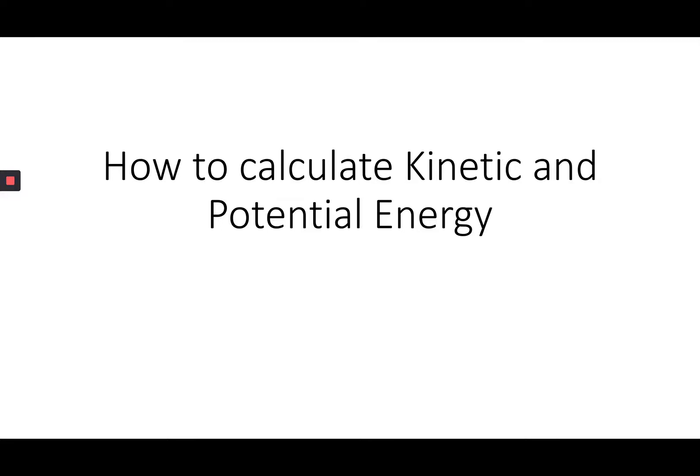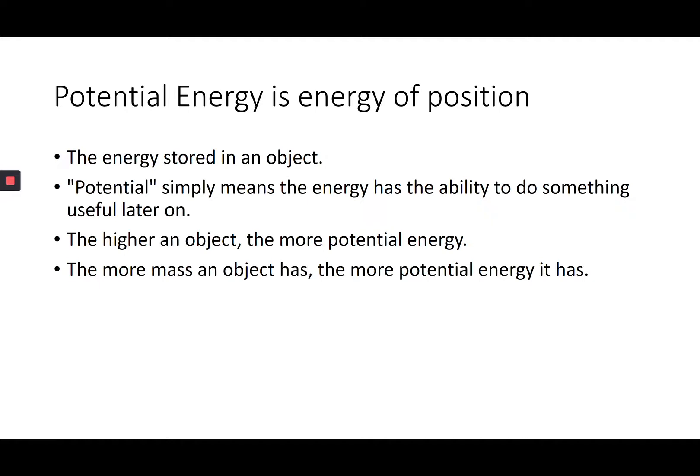Use math to support your answer for kinetic and potential energy. A quick review: potential energy is energy of position — it's basically what's stored in an object that it's going to be able to do something later on. The higher an object, the more potential energy; and the more mass it has, the more potential energy. So those two things are height and mass.